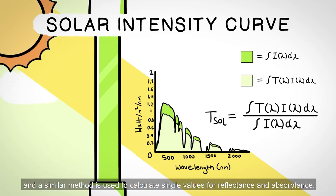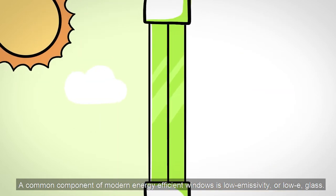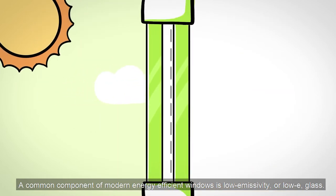A similar method is used to calculate single values for reflectance and absorptance. A common component of modern energy-efficient windows is low emissivity, or low-e glass.